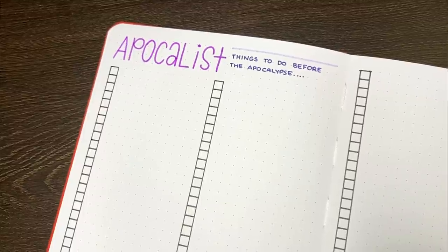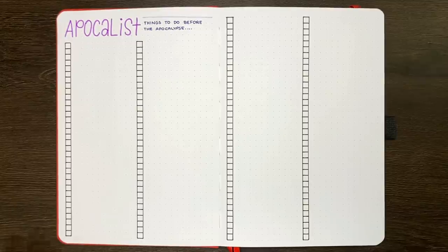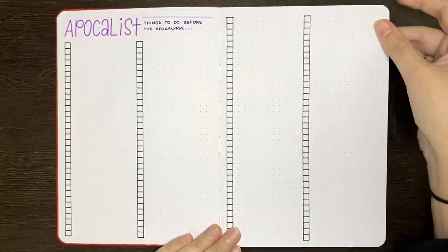If you had an Apocalypse, though, what kind of things would you include? What are some of the things that you want to do or achieve before the apocalypse happens?